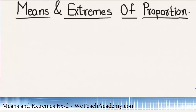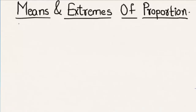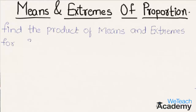Welcome to vtchecademy.com. In this presentation we are going to solve a problem using means and extremes of a proportion. We have to find the product of means and extremes for the given statement, which is 2 is to 3 which is equal to 6 is to 9.